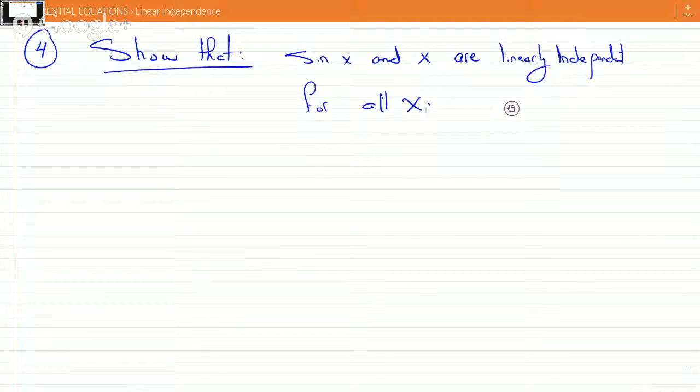But this is still depending on x. You see, this one is to prove that sine x and x are linearly independent. It might be a harder one to do using the definition. Here, it might just be easier to use the Wronskian.